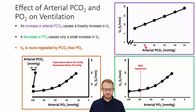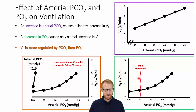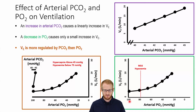As CO2 increases — which is what would happen with increasing exercise intensities — ventilation is also going to increase and it does so linearly, meaning a straight-line progressive increase in ventilation. When we look at oxygen, there is an increase in ventilation, it's kind of linear but starts off very, very shallow. It's not until you get past the hypoxia threshold where you really have a strong increase in ventilation due to a decrease in oxygen with increasing exercise intensity.